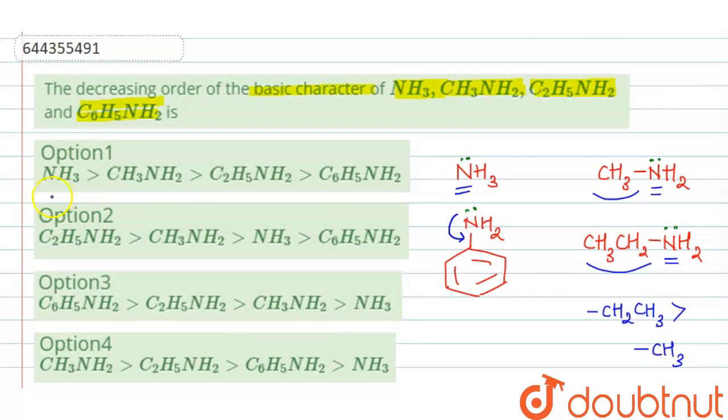So if we see the options, here it is shown that ammonia is most basic, so this is incorrect. Here it is shown that C2H5NH2 is most basic, then methylamine, then ammonia, and then aniline. So this